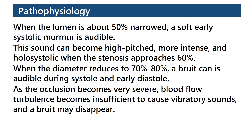When the lumen is about 50% narrowed, a soft early systolic murmur is audible. This sound can become high-pitched, more intense, and holosystolic when the stenosis approaches 60%. When the diameter reduces to 70% to 80%, a bruit can be audible during systole and early diastole. As the occlusion becomes very severe, blood flow turbulence becomes insufficient to cause vibratory sounds, and the bruit may disappear.